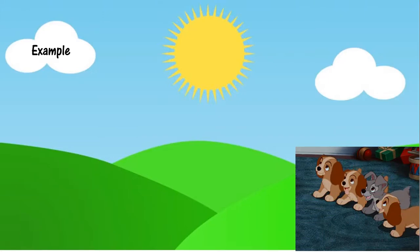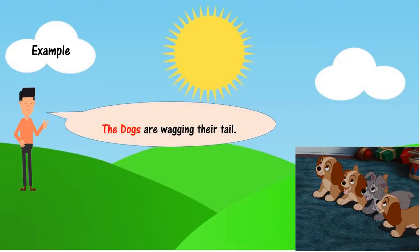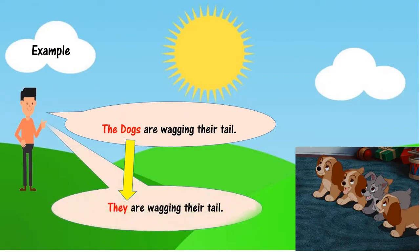And here there is a group of dogs that are wagging their tail. So the dogs are wagging their tail. We can replace the word the dogs with the word they, and I can say they are wagging their tail.